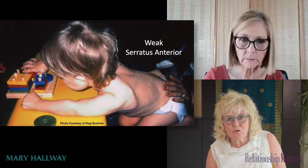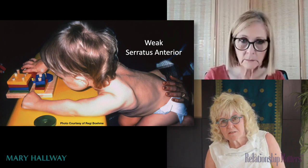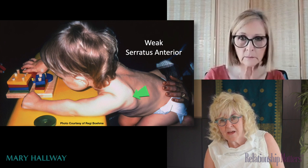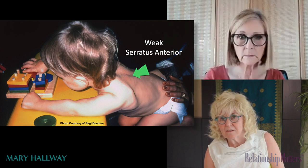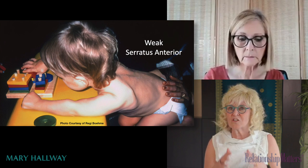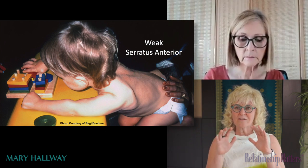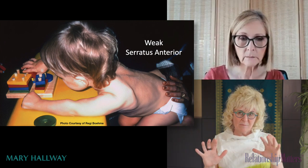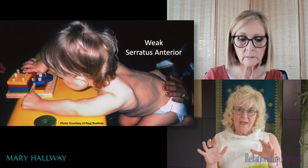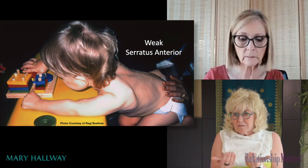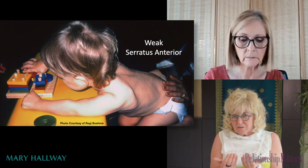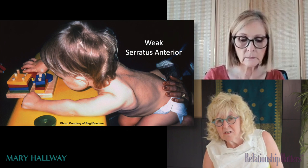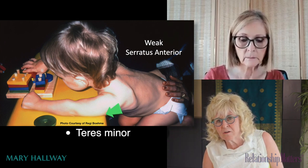Look at this huge space between the medial border of the scapula and the thoracic spine. There is such limited connectivity between the scapula and the rib cage and the oblique muscles, the abdominal oblique muscles. And what you see happening as a result is subsequent shortening here of teres.